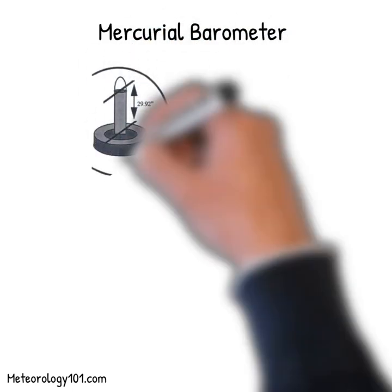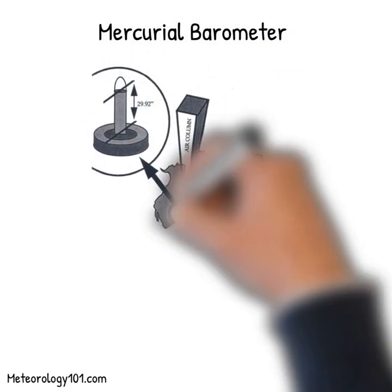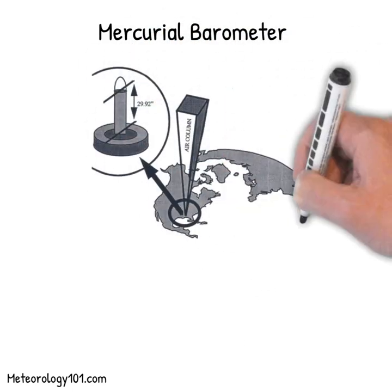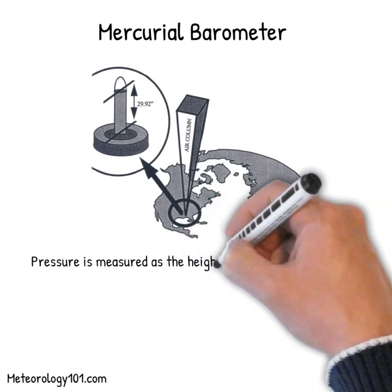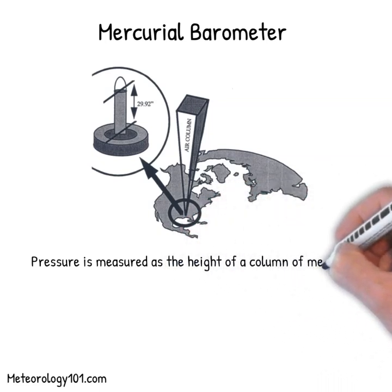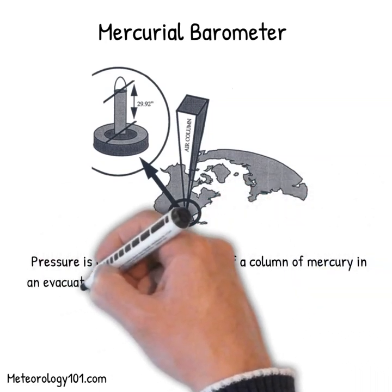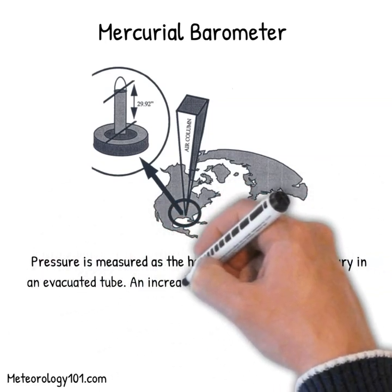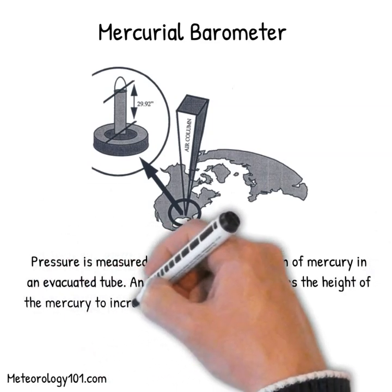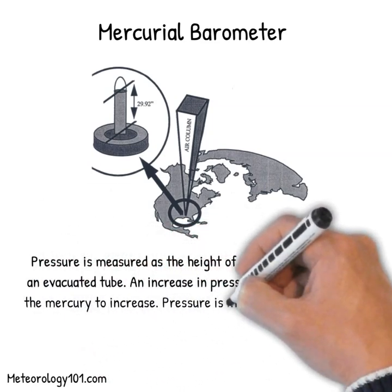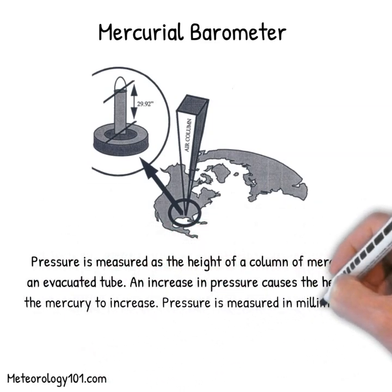Pressure is measured as the height of a column of mercury in an evacuated tube. An increase in pressure causes the height of the mercury to increase. Pressure is measured in millimeters or inches of mercury, which can be converted to pressure units.